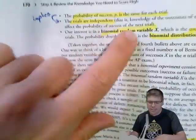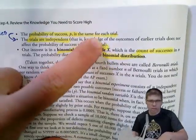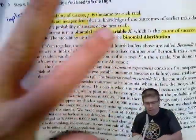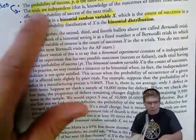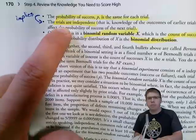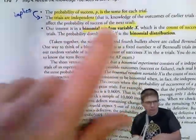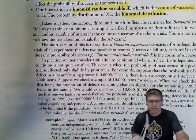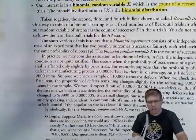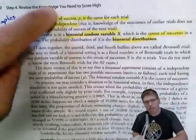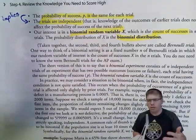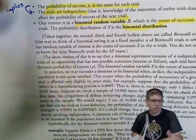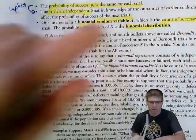The probability of success must be the same for each trial — we assume that for things like free throws — and the trials have to be independent. A constant probability implies independence. However, independence does not necessarily imply constant probability. For example, a coin flip and rolling a die are independent events, but they don't have the same probability.